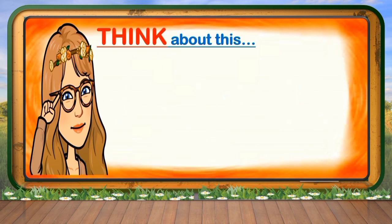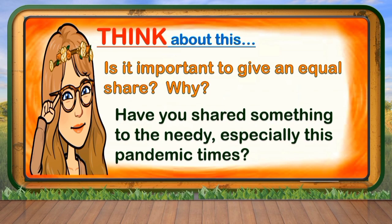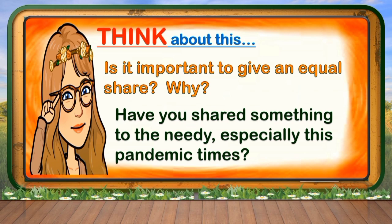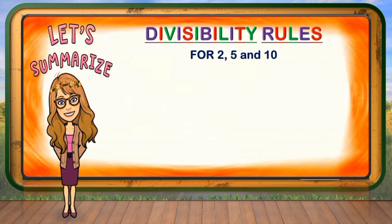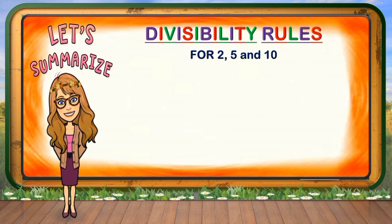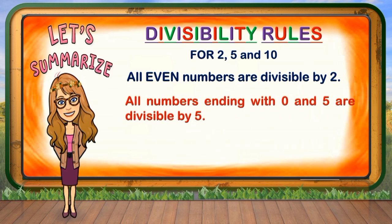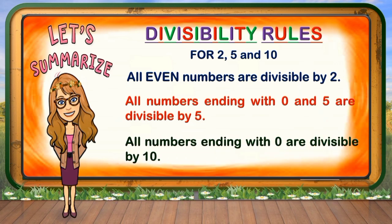Think about this, children: Is it important to give an equal share? Why? Have you shared something to the needy, especially these pandemic times? Let us summarize what you have learned regarding the divisibility rules for 2, 5, and 10. All even numbers are divisible by 2. All numbers ending with 0 and 5 are divisible by 5. And finally, all numbers ending with 0 are divisible by 10.